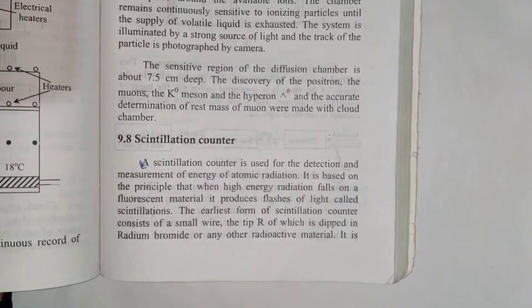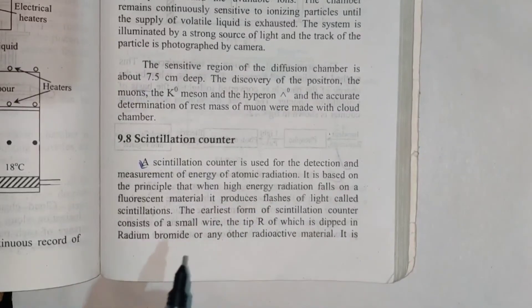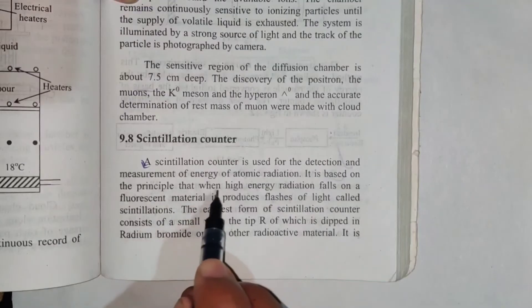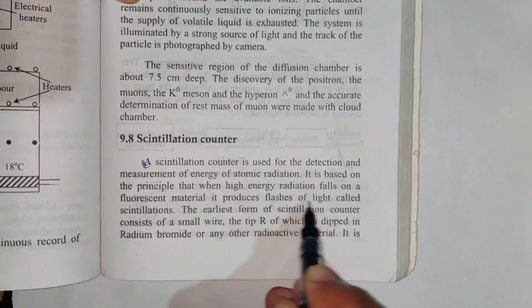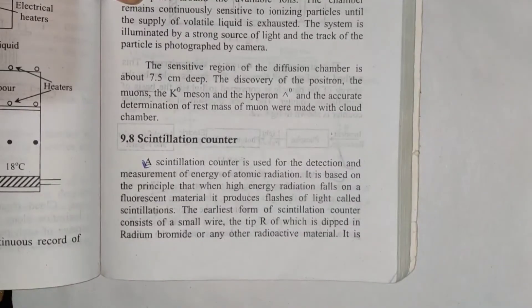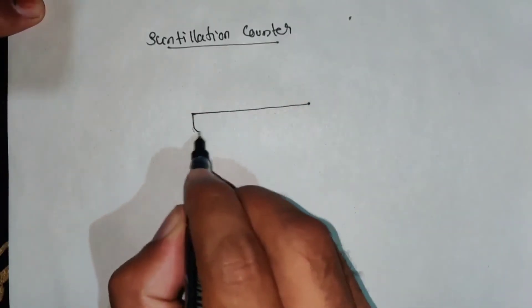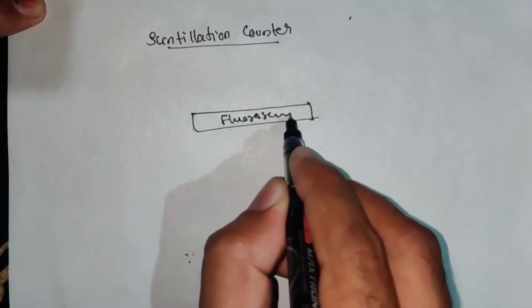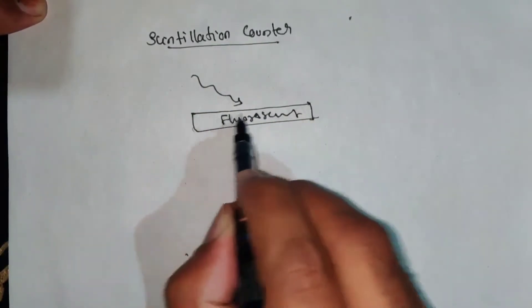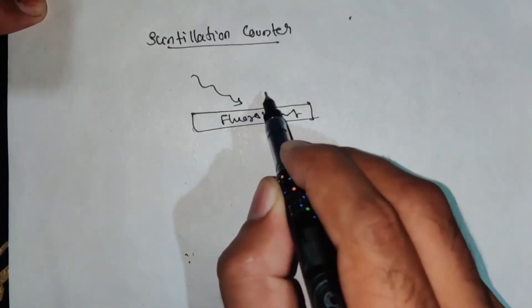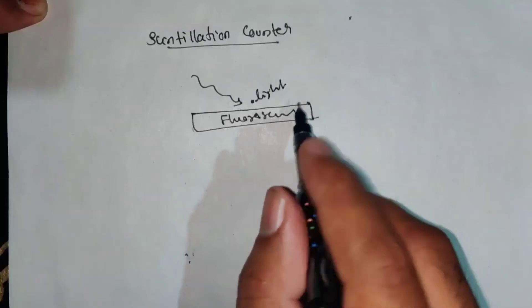I'll discuss the scintillation counter now - detection and measurement of high energy radiation. It is based on the principle that when high energy radiation falls on a fluorescent material, it produces flashes of light. These flashes of light are called scintillations. The high energy radiation particles hit the fluorescent material.